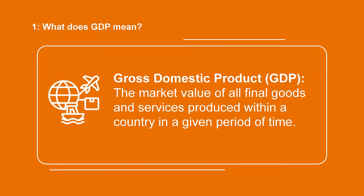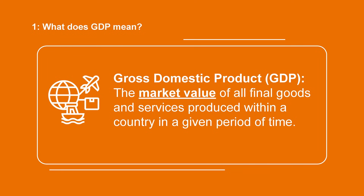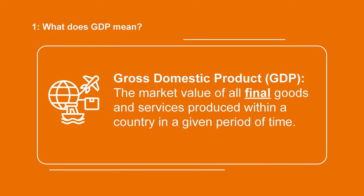Let's analyze this sentence little by little. The market value consists of the actual prices at which goods and services are being traded. Why final goods? Because we are not considering intermediate goods. This avoids us from counting certain goods more than once. For example, if wood is being traded for manufacturing paper, which is sold to manufacture notebooks, we are going only to consider the final product, the notebooks.